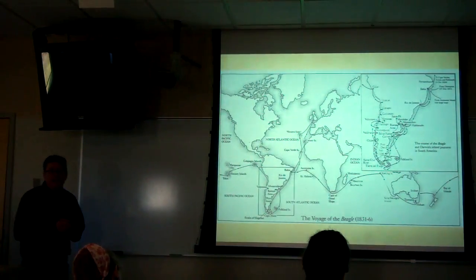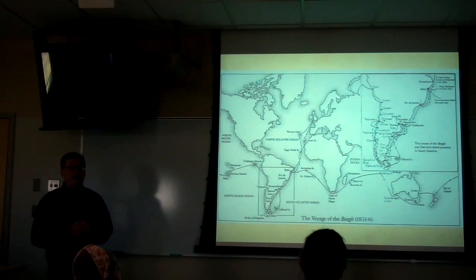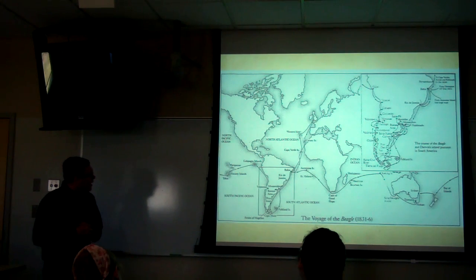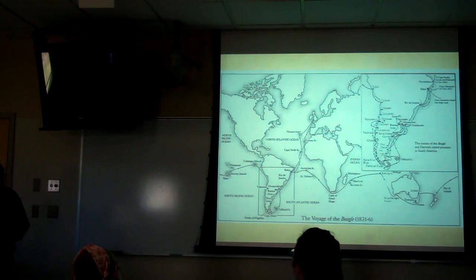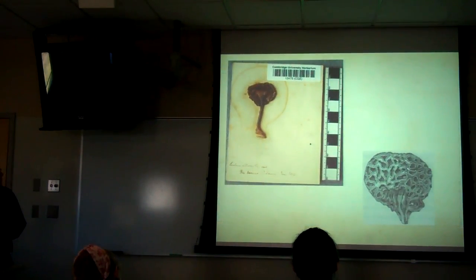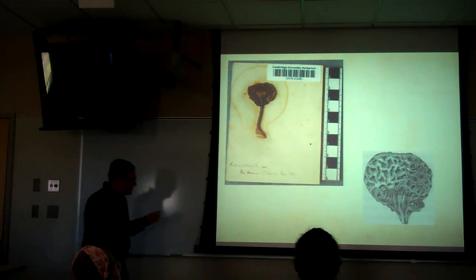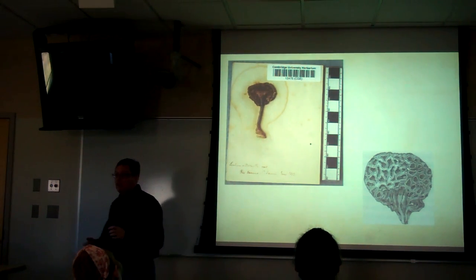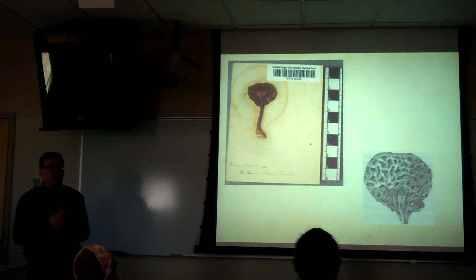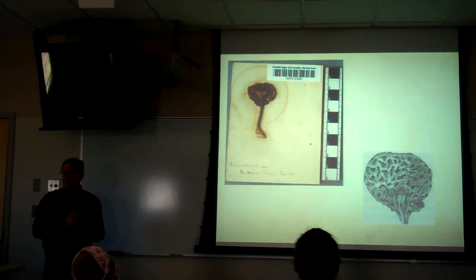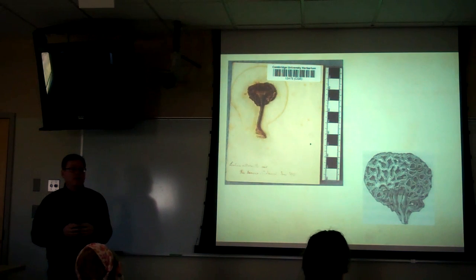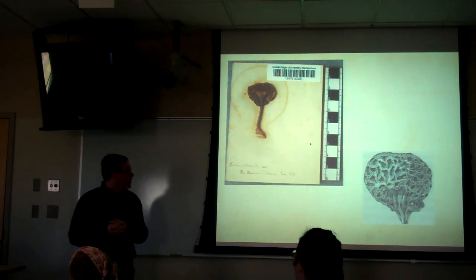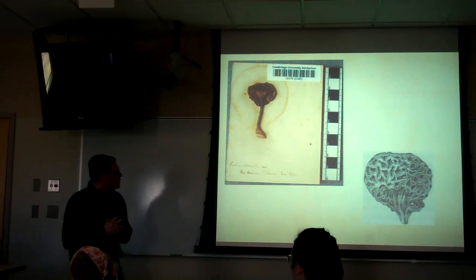But it turns out on the Voyage of the Beagle he actually did collect a number of different fungi that were interesting and he described, or helped describe. One of the most famous ones is Cyttaria, a species he found growing in Tierra del Fuego associated with the Southern Beech, which is a relative of the beech tree in the Northern Hemisphere but unique to the Southern Hemisphere.